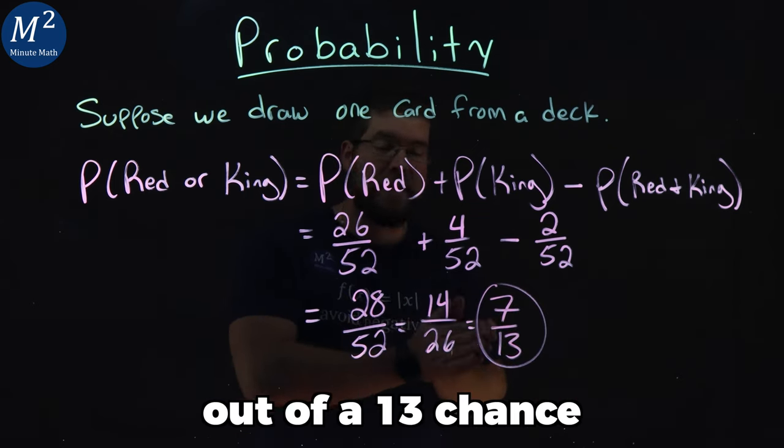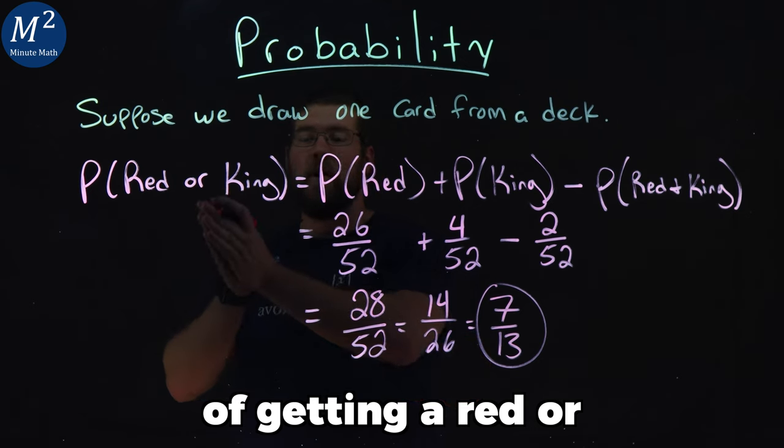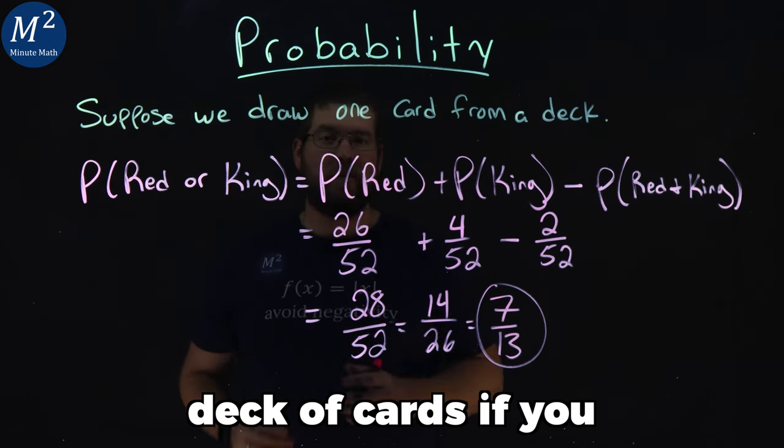So there is a 7 out of 13 chance of getting a red or a king from a standard deck of cards if you draw one card.